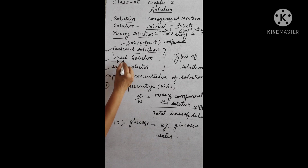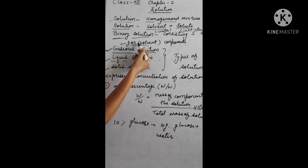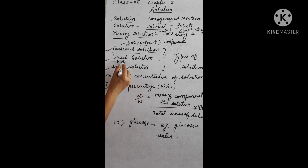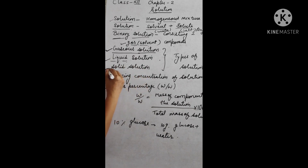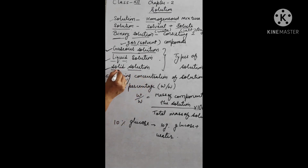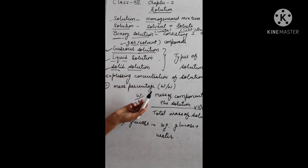The next type is liquid solution, where liquid is the solvent and is present in the higher amount. Gas, liquid, or solid can be present in lower amounts acting as solute. After that are solid solutions, where solid is the solvent present in greater amount, and gas, liquid, or solid can be present in smaller amounts as solute.